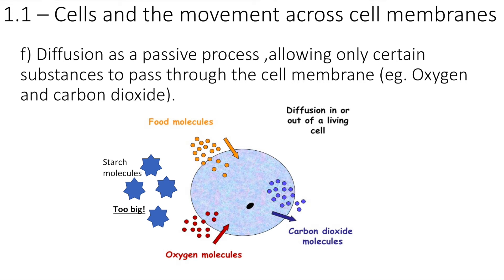Welcome back to Ms. Clark Does Science. Last time we were looking at how visking tubing can be used to model diffusion on the cell membrane. Today we're going to go one step further and talk about how it's a passive process, with some examples of things that diffuse in and out of cells.